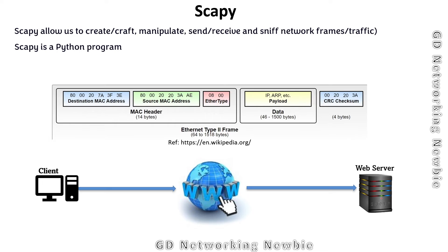Looking further into the details of a frame, we can have different fields: destination MAC address, source MAC address, default gateway, IP payload, source IP address, destination IP address, and within IP we can also have TCP. Scapy actually allows us to change and manipulate the values of these fields, which I'll demonstrate in my Kali Linux machine.